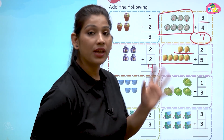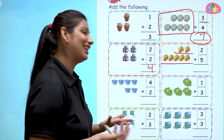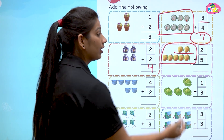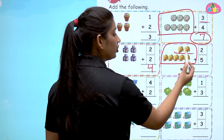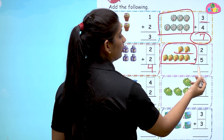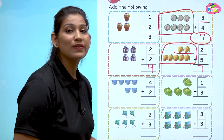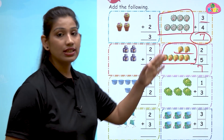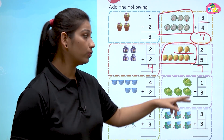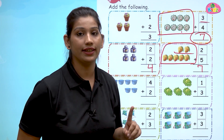Now we have two mangoes and then five mangoes. Two plus five — so two plus five is how much? Let's count in total: one, two, three, four, five, six, seven. Two plus five is seven.